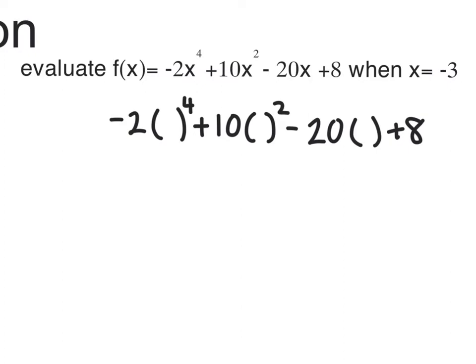The next thing to do would be to plug in the value of negative 3 into each of those parentheses. There we have them plugged in, and now it's just a question of doing the correct order of operations to simplify.